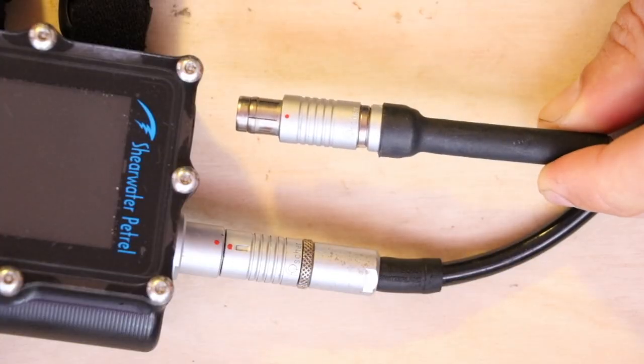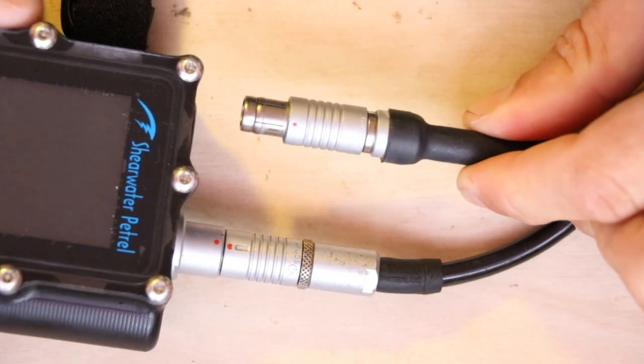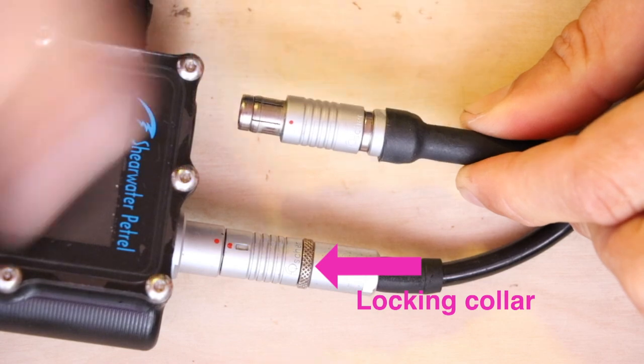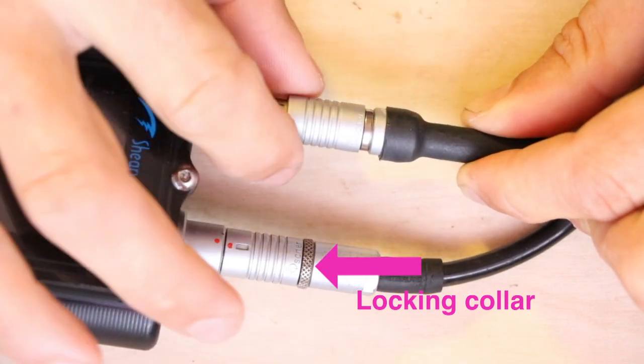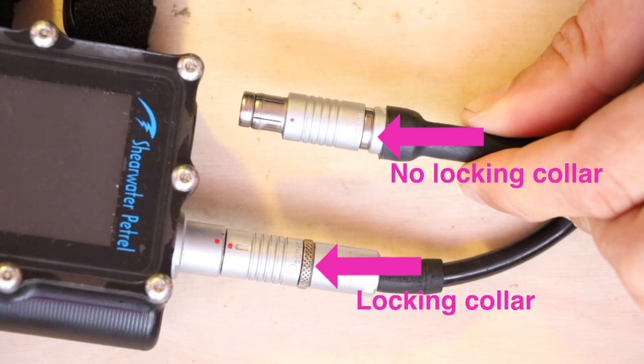It's worth noting that there's two types of this plug out there. Some have a locking collar which when rotated in the forward position locks this plug and prevents the plug from being disconnected. Some plugs do not have a locking collar.